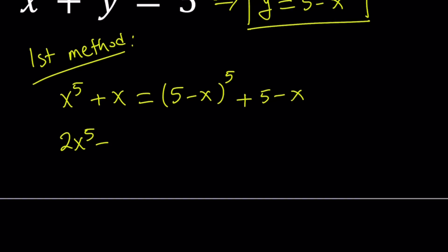2x to the 5th minus 25x to the 4th plus 250x to the 3rd power minus 1250x squared plus 3127x, which is like an interesting number, minus 3130 equals 0. So that's our quintic.